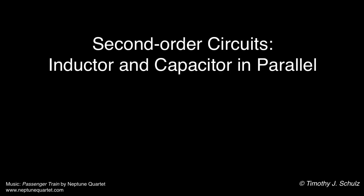In this lecture, we demonstrate a method of analysis for second-order circuits in which an inductor and capacitor are connected in parallel. We show how to obtain the initial conditions for the inductor current and its derivative, and then demonstrate how to use those conditions to solve for the inductor current in under-damped, critically-damped, and over-damped circuits.